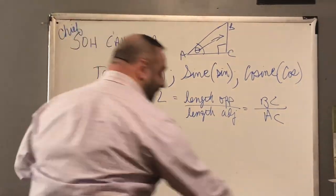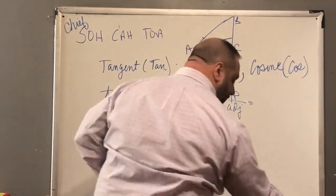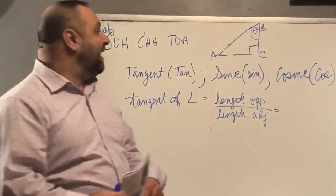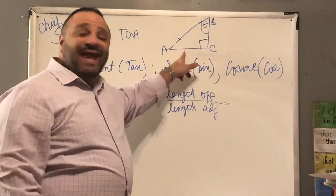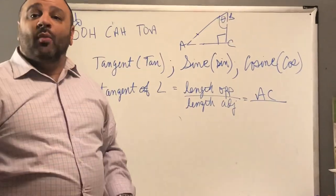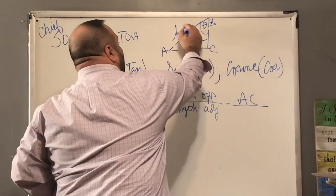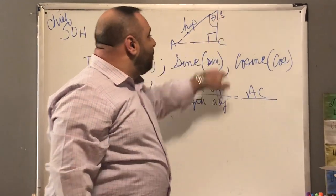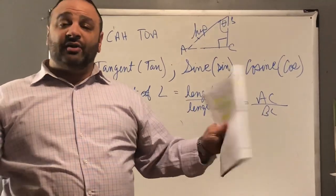What if I want to find angle B? The side opposite angle B is AC, so the tangent of angle B equals AC over the adjacent side. Remember, the hypotenuse is always out of the question for the tangent. The adjacent side would be BC. So the tangent of angle B equals AC over BC. Let's practice — turn to page 32.